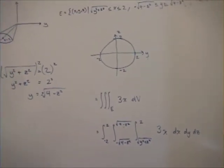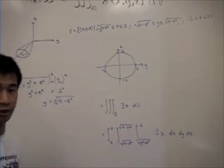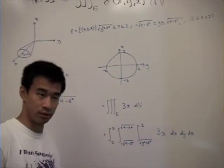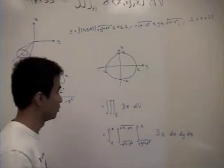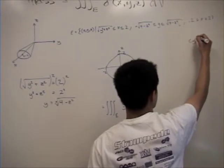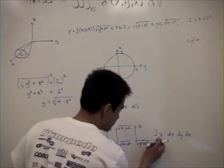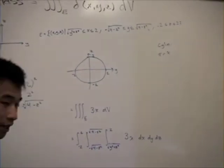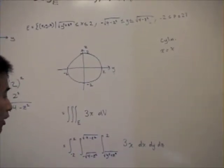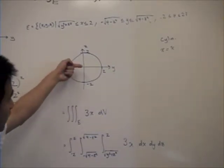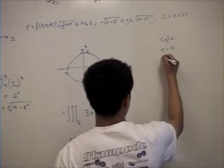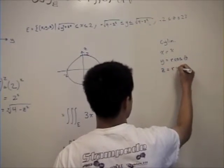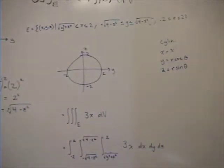We're going to convert y and z in terms of cylindrical coordinates. Recall that cylindrical coordinates keep one variable the same while expressing the rest in terms of r and theta. Since the density function is in terms of x, we'll keep x the same, and change y and z. Looking at our circle, y equals r cosine of theta, and z equals r sine of theta.